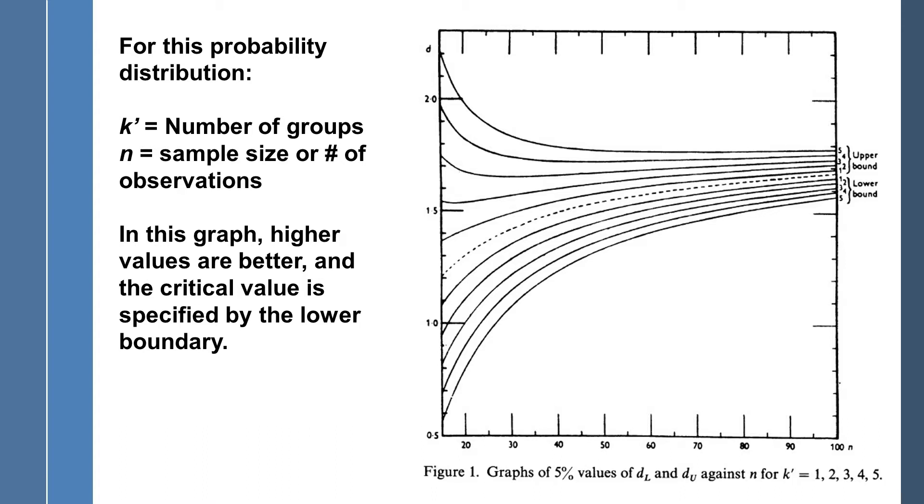So typically, with single case design research, you have a single group, and you might have multiple measurement periods for that single group. And I'm just, a single group, I mean a single individual. Even if you have multiple individuals, it's really the same group. So I'm just going to assume that K prime equals one for this application.